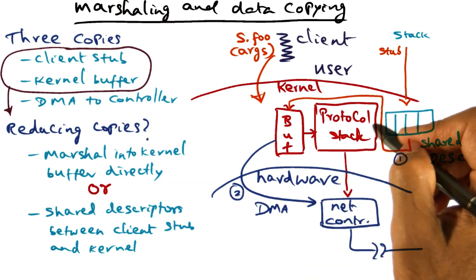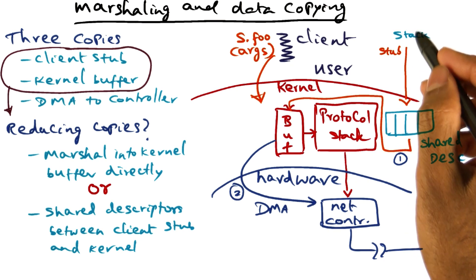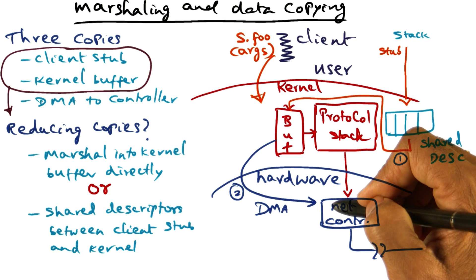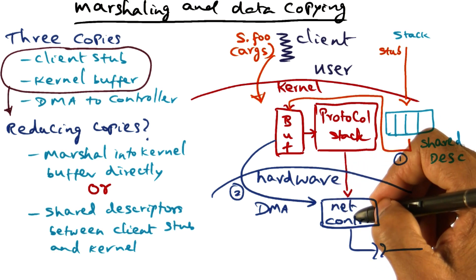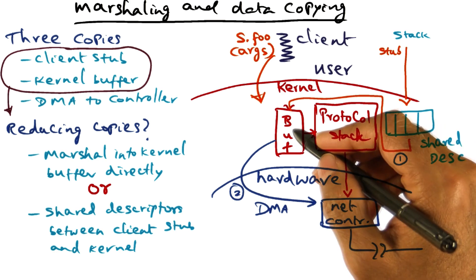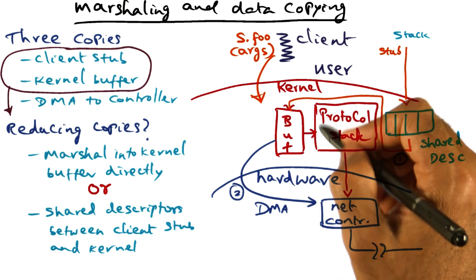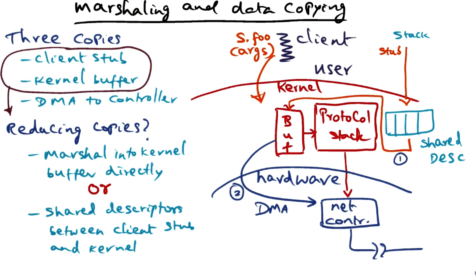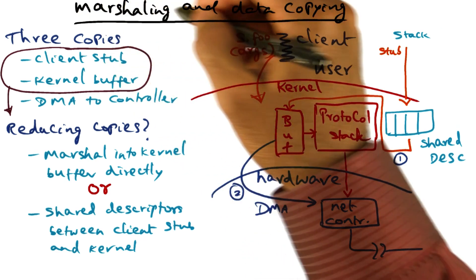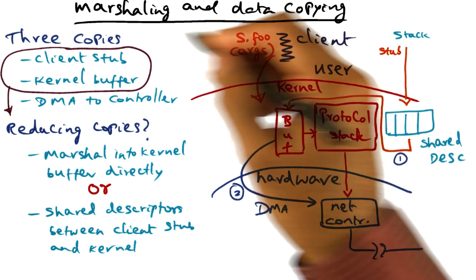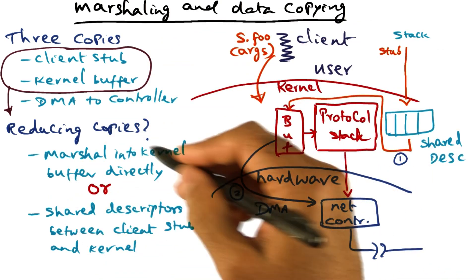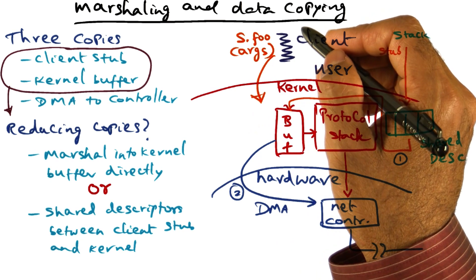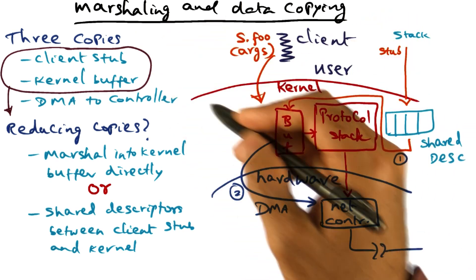There is one copy happening going from the stack into the kernel buffer, and the second copy is inevitable if the network controller requires a DMA to be done from the system memory into its internal buffer before the bits can be pushed out on the wire. So that's the first source of overhead. These are techniques for reducing the copying overhead, which is the dominant part of marshalling the arguments.